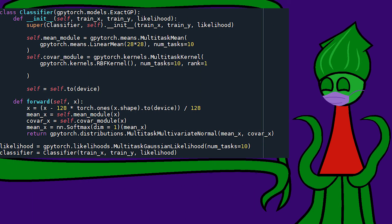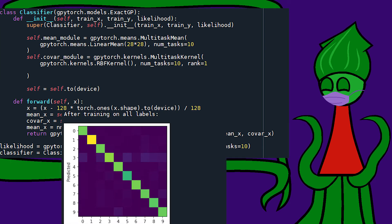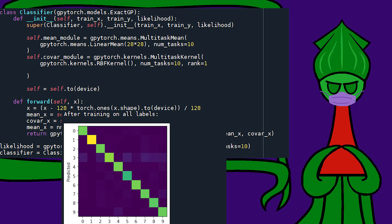Here, I made a Gaussian process which can classify the MNIST digits pretty well. Of course, it still catastrophically forgets.